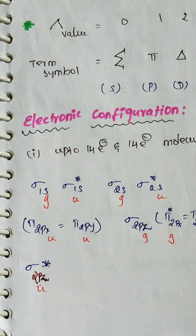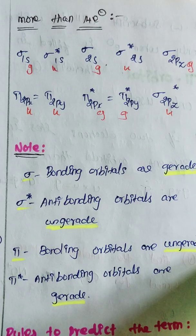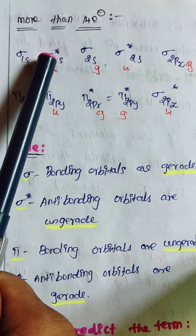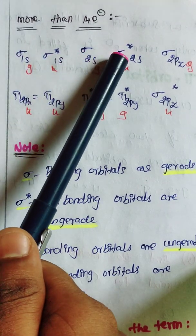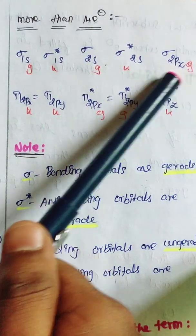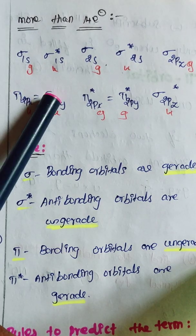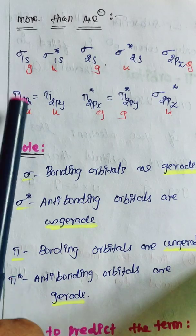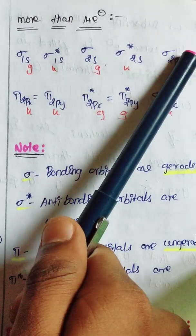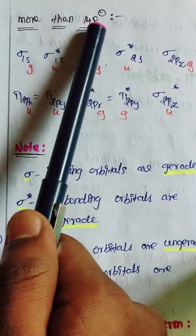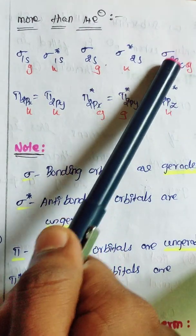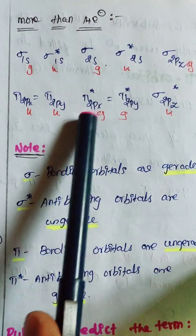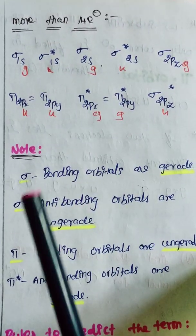For more than 14 electron systems, we follow a different electronic configuration: sigma 1s, sigma* 1s, sigma 2s, sigma* 2s, then sigma 2pz comes first, then pi 2px equal to pi 2py. This is the key change — for less than 14 electrons, pi 2p comes before sigma 2pz, but for more than 14 electrons, sigma 2pz comes first, then pi 2px and pi 2py, and the remaining orbitals are the same.